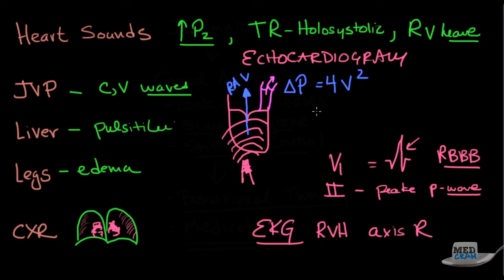The way it's affected is that the change in pressure is equal to four times the velocity squared. So if we know what the velocity is, let's say it's three meters per second, we can square that, which will give us nine, and multiply it by four. And in that case, nine times four would be 36 millimeters of mercury.